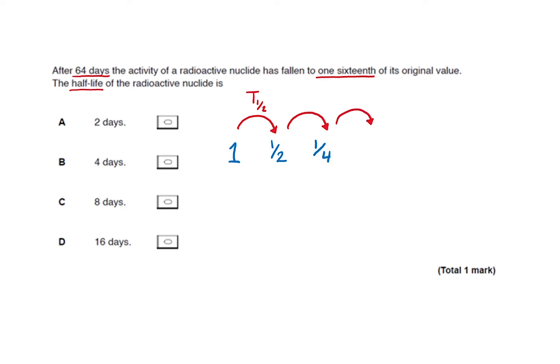So after another half-life has gone by, we divide by 2 again. 1/8th of the initial activity remains after 3 half-lives. And after 4 half-lives, only 1/16th of the initial activity remains.